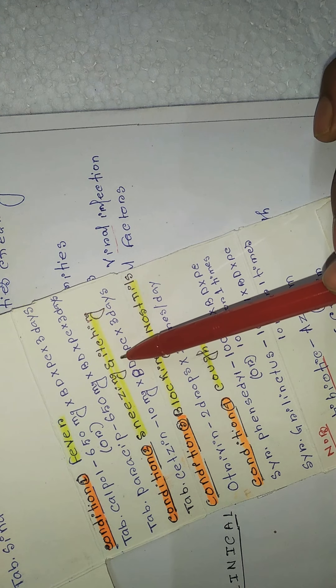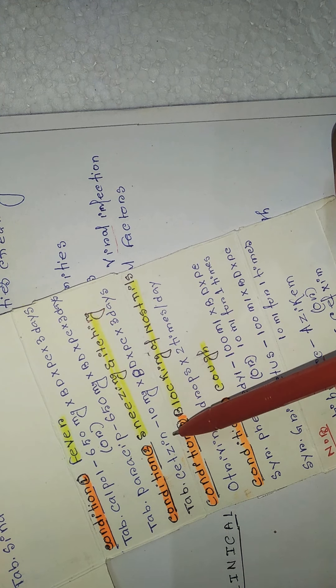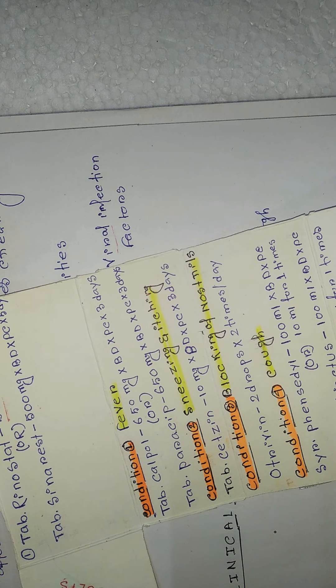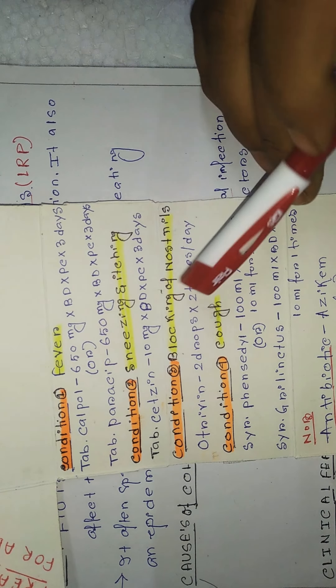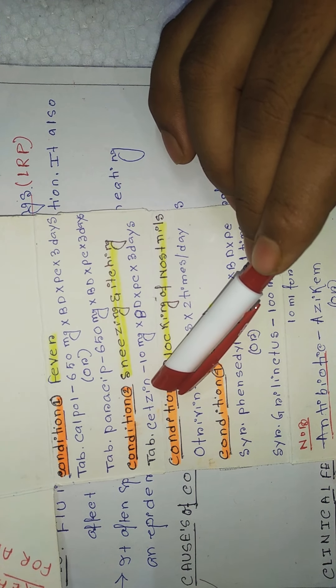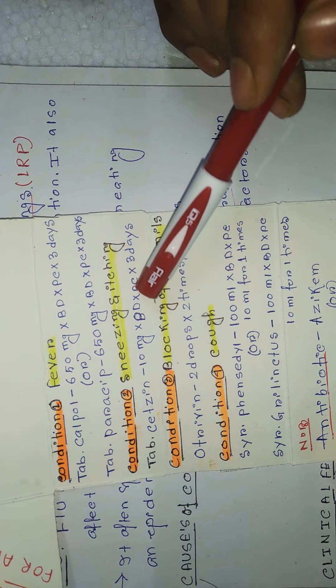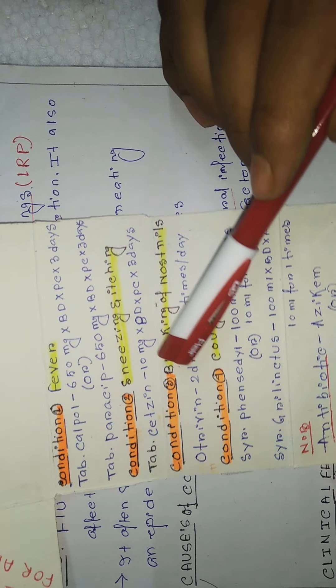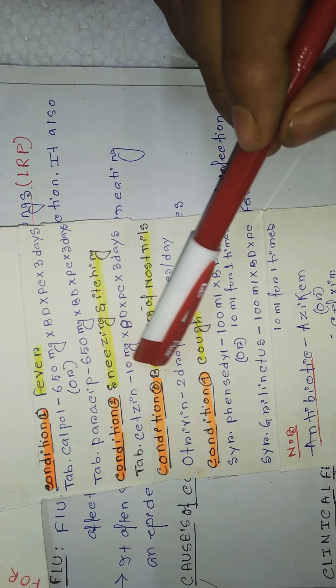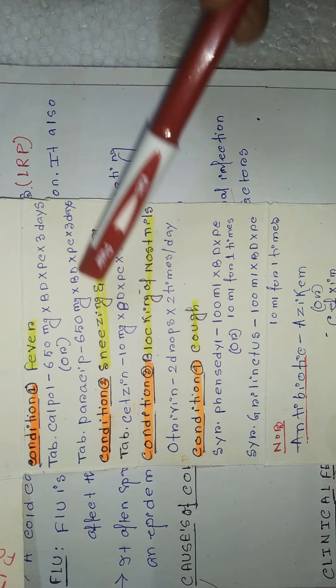Condition two: if the patient complains with sneezing and itching, that time you can give Cetirizine — that is an antihistamine drug — 10 mg BD, PC, for three days. Cetirizine is an antihistamine to prevent sneezing and itching.